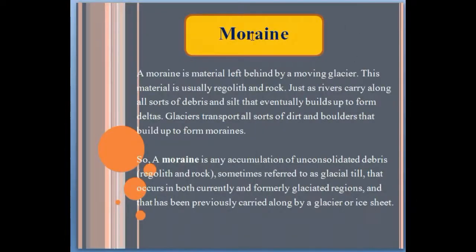What is a moraine? A moraine is material left behind by a moving glacier. This material is usually regolith and rock. Just as rivers carry along all sorts of debris and silt that eventually build up a delta, glaciers transport all sorts of dirt and boulders that build up to form moraines.